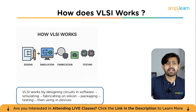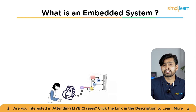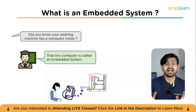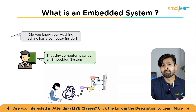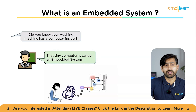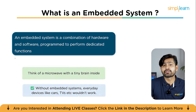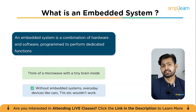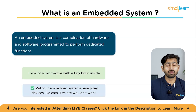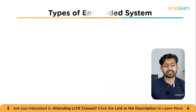Now let's explore embedded systems. Think of an embedded system as a special-purpose computer — hardware plus software built to do one specific job and do it well. Unlike your laptop which can run hundreds of different programs, an embedded system might just control your washing machine, monitor your heart rate, or keep your car engine running efficiently. It's always focused on one thing.